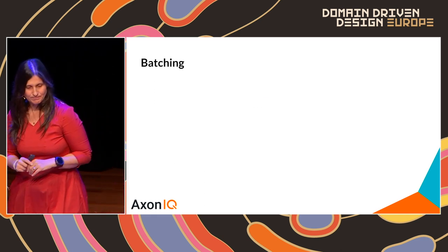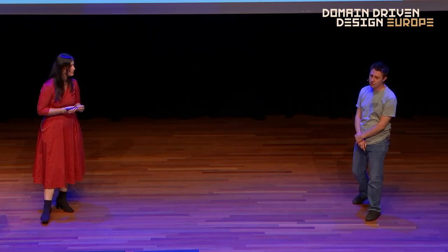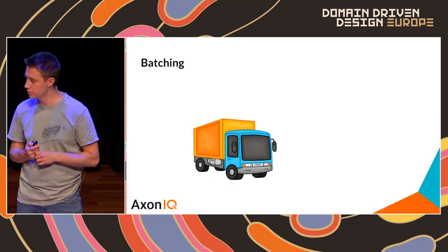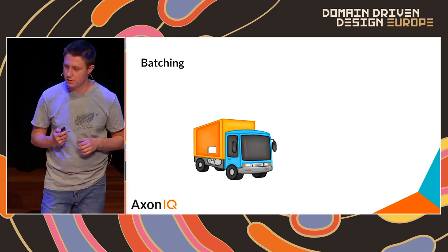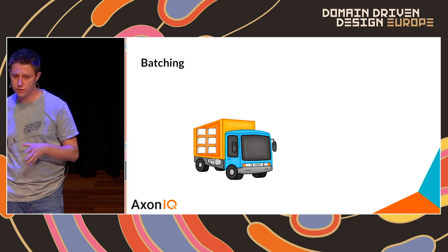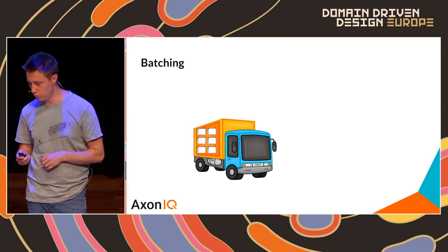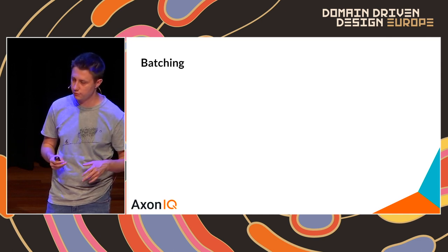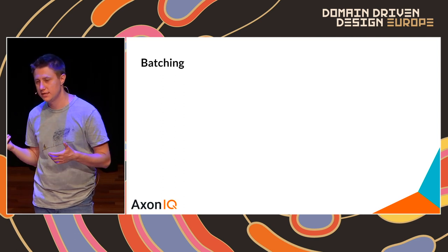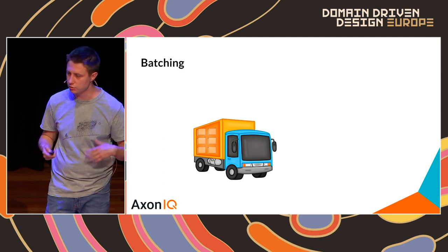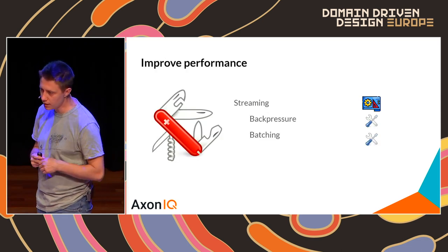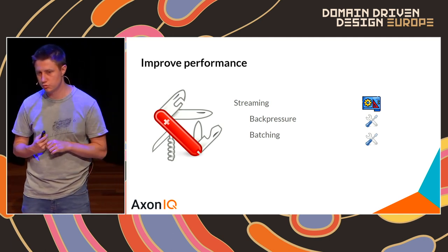Another way to improve streaming architecture is batching. We gather a batch of messages, wait until it is full, then send them all to the destination at once. By sending messages in a batch rather than one by one, we reduce the footprint on the wire — instead of attaching metadata and headers to each message, we attach them once to the batch, improving performance. With batching, we complete all solutions to the performance challenge.